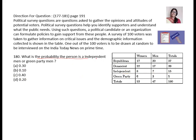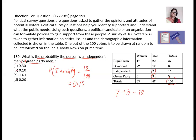What is the probability that the person is an independent man or a green party man? Independent man or green party man — 'or' means we add them. Independent man is 7, green party man is 3, so 7 plus 3 equals 10. Total voters: 100. So the probability of independent man or green party man equals 10 upon 100, which is 0.10. B is the answer.